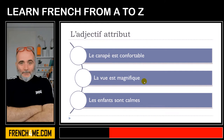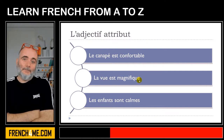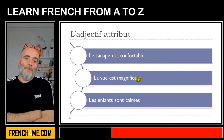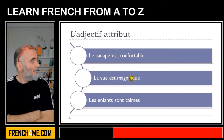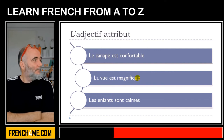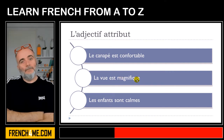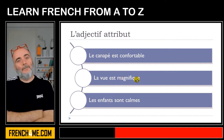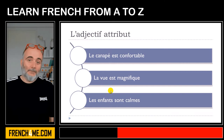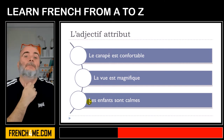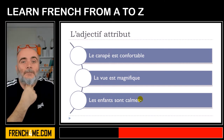You cannot see the feminine form here because it's actually the same as the masculine, but keep in mind that you should put the feminine form — because it's an adjective — if the adjective changes in the feminine. Here you get the plural form, so you just add an S to être.